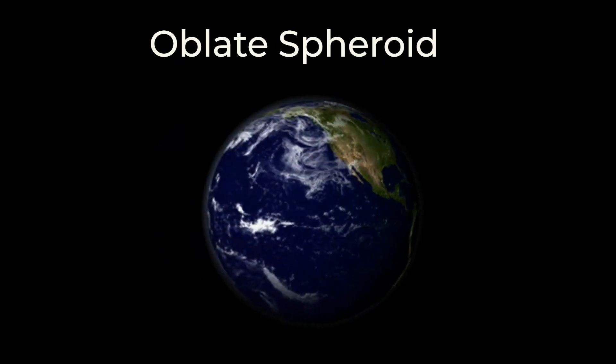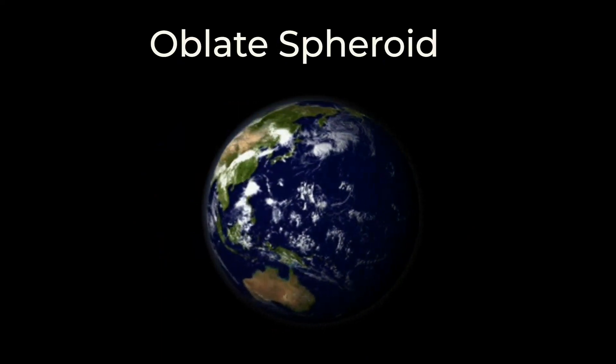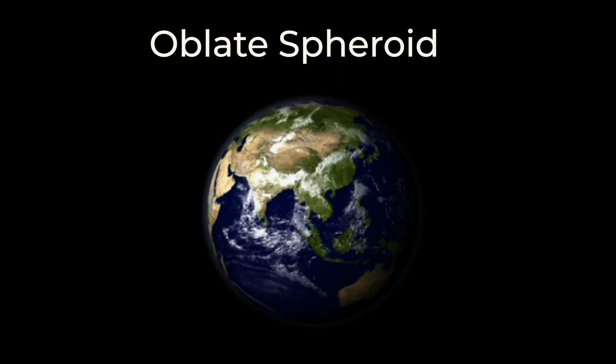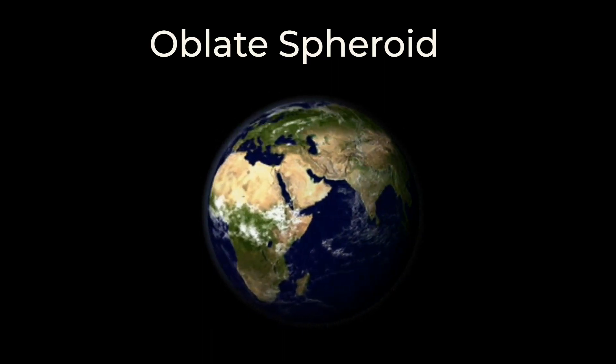Because of the bulging caused by the Earth spinning, the Earth is not a perfect sphere. Instead, it is an oblate spheroid.